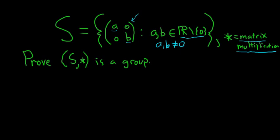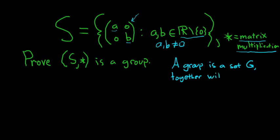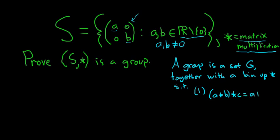Before we do that, let's recall the definition of a group. A group is a set G together with a binary operation star, such that three conditions are satisfied. The first one is associativity: the binary operation has to be associative, meaning A star B star C equals A star B star C, for all A, B, C in G.